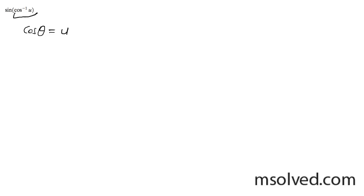The sine of the inverse cosine of u. I can start off here by saying that the cosine of some random theta is equal to u — the inside is all I'm concerned about right now. So it's going to be in quadrant 1. This is u, some arbitrary value. And since it's cosine — adjacent over hypotenuse — it's simply u over 1. So then we have the sine of this triangle.